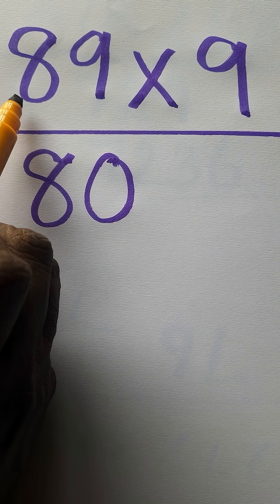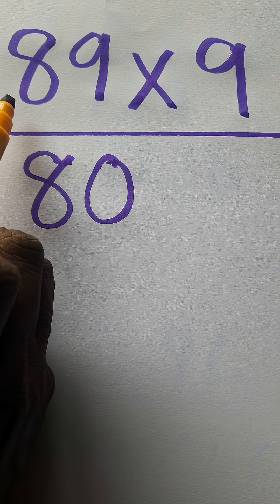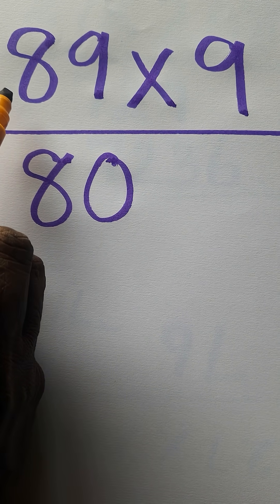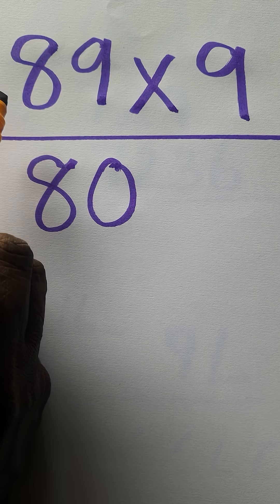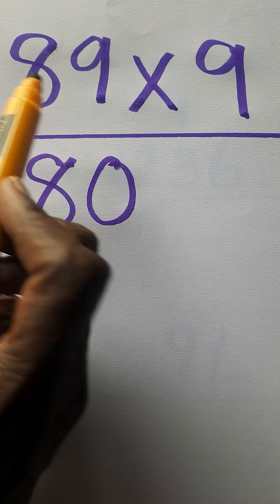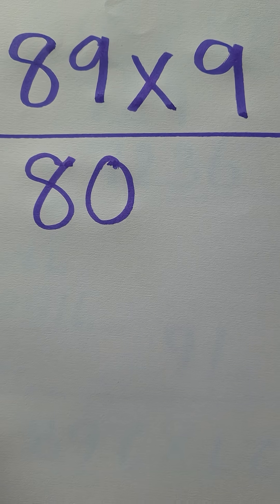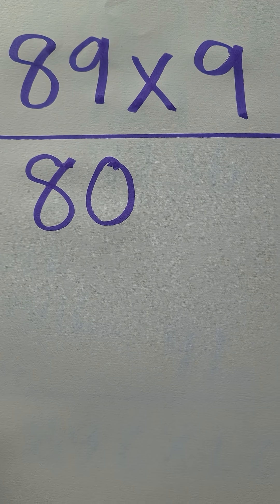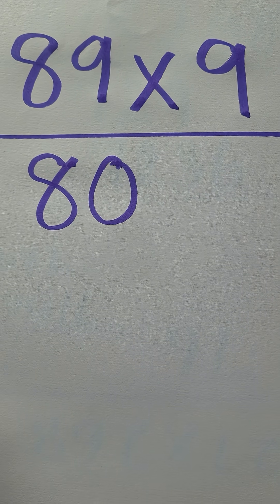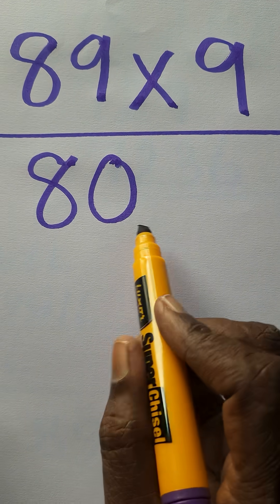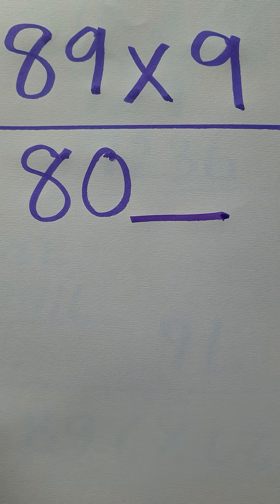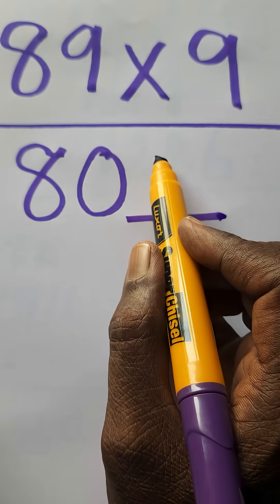Tens column is 8, 8 plus 1 is 9. Subtract 89 by 9, gives 80. The ending here must be put at the end. 10 minus 9 is 1.